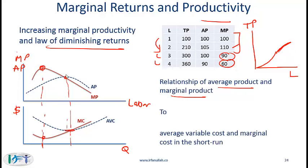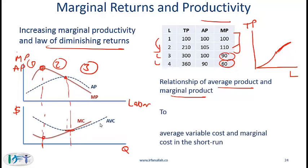In region I, average product and marginal product are going up, while marginal cost and average variable cost are going down — output going up and costs going down makes sense. In region II, marginal product is going down and marginal cost is going up, while average product is going up and average variable cost is going down. In region III, both average product and marginal product are going down, while marginal cost and average variable cost are going up.